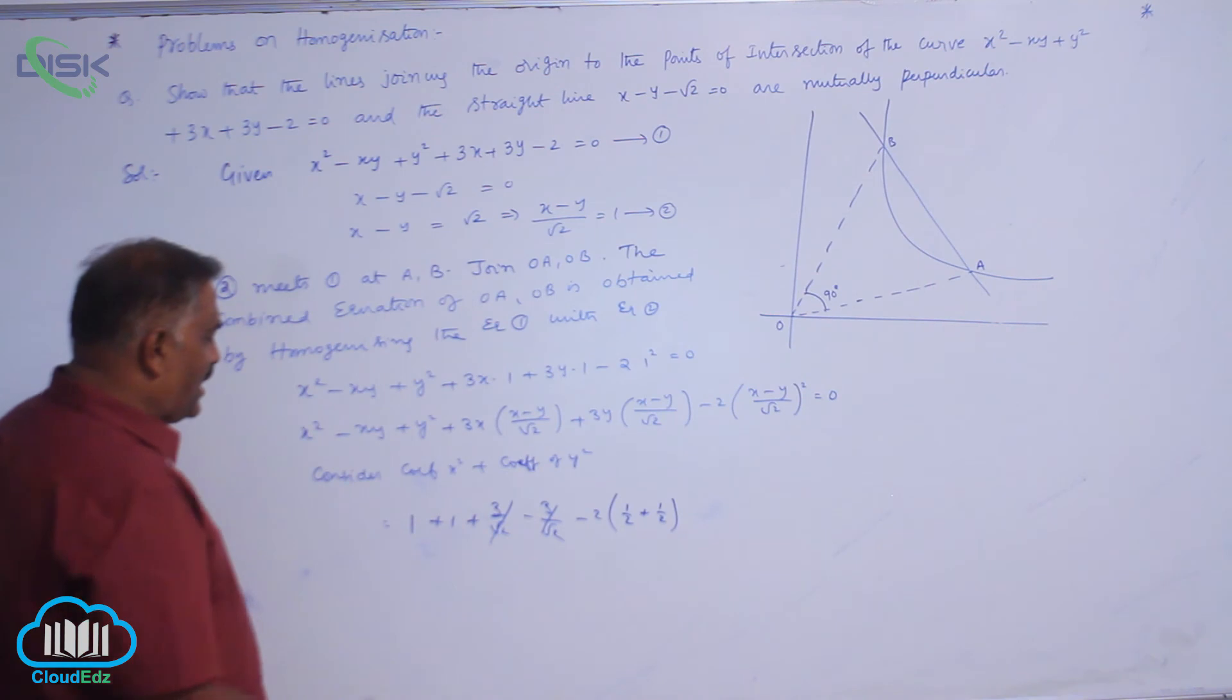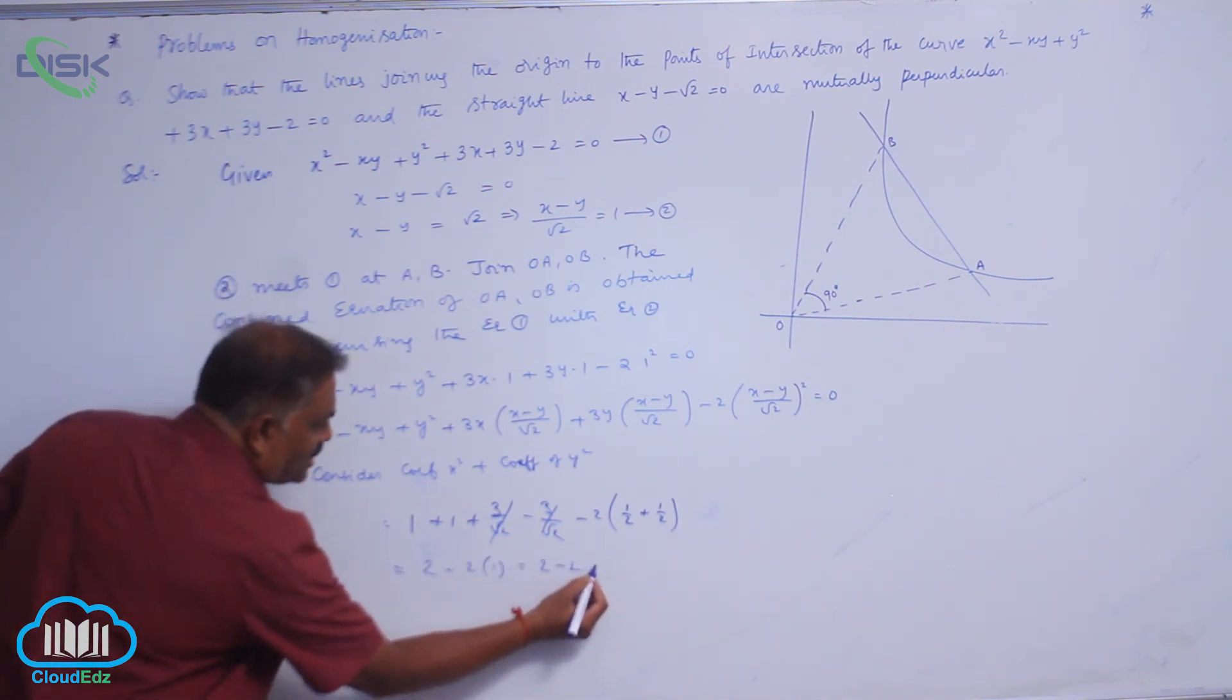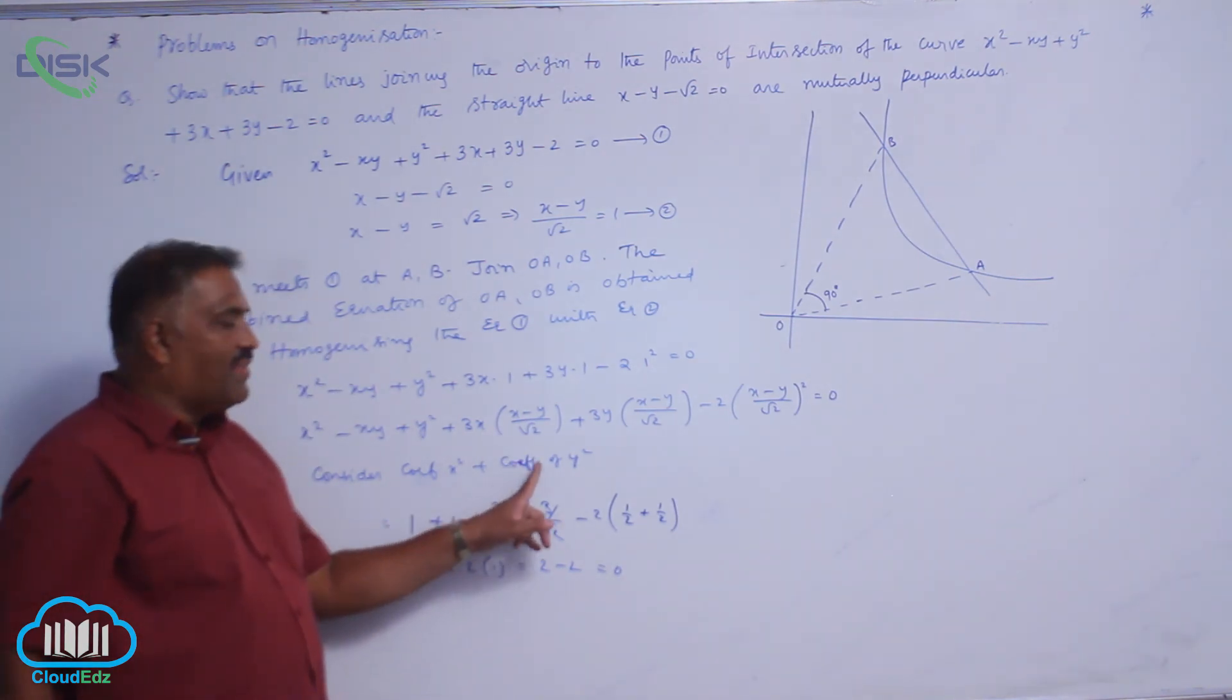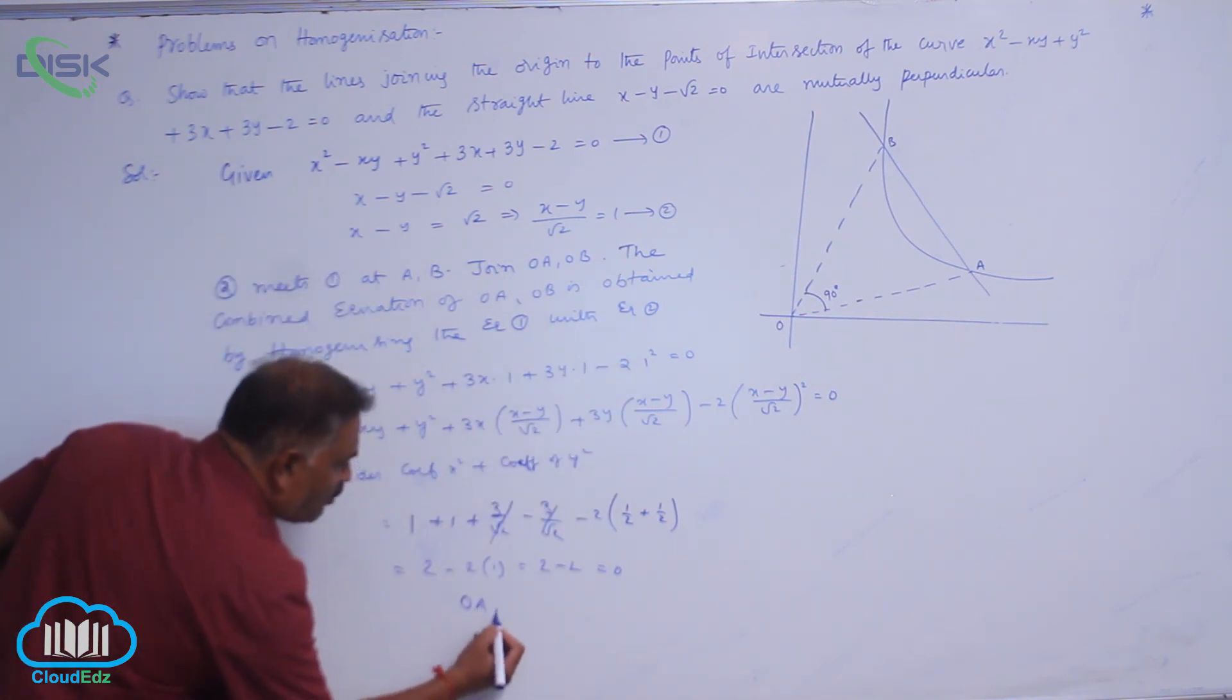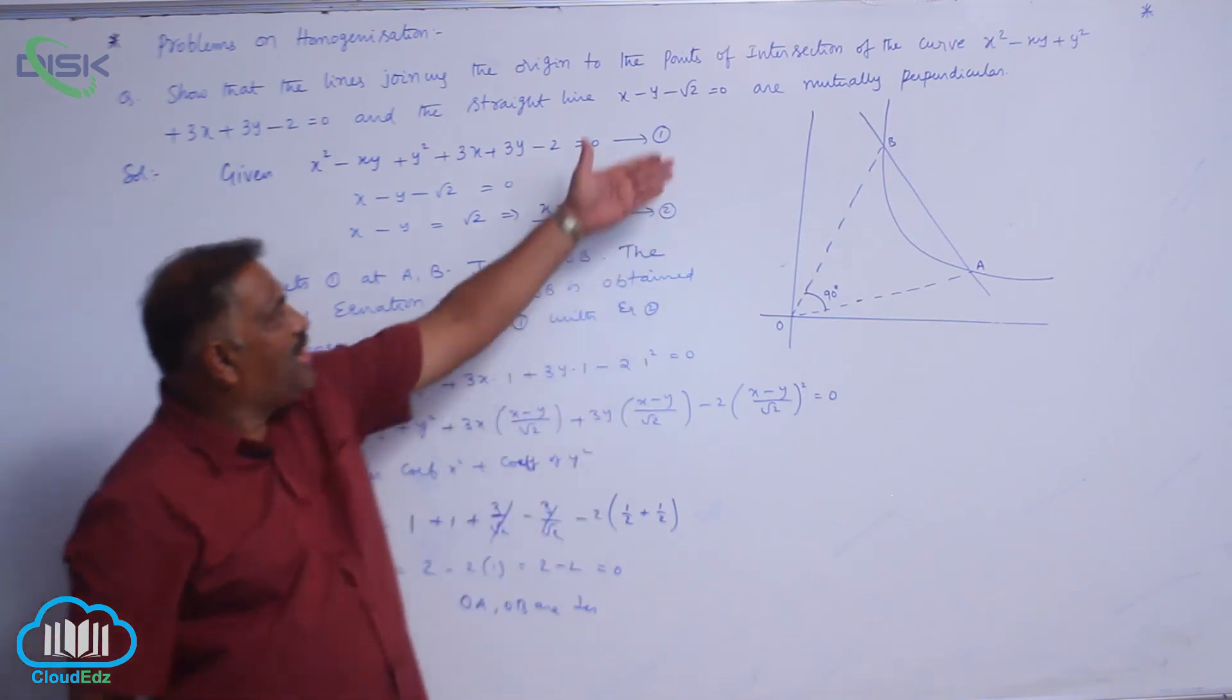So, this will become totally 2 - 2·1 that is 2 - 2 = 0. Coefficient of x² plus coefficient of y² equal to 0 means the lines OA, OB are perpendicular to each other. That is what we need to prove.